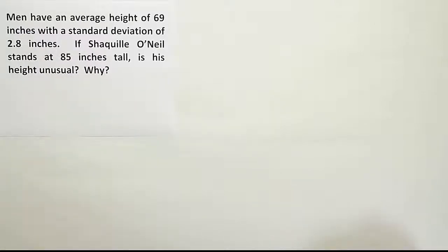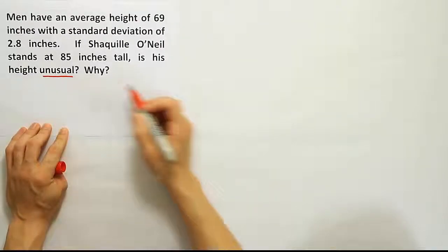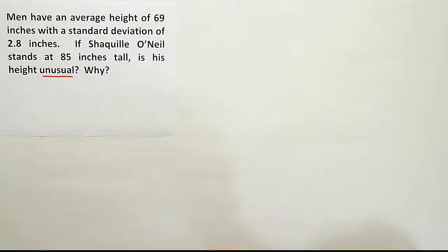When I read this problem, I want to think about the question being asked at the end: is his height unusual? One of the ways that we can judge if something is unusual is by looking at it in terms of its z-score. A z-score is a reflection of how many standard deviations a number is away from the mean.